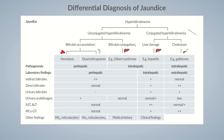To sum up, laboratory findings in extrahepatic jaundice characteristically show increased serum direct bilirubin levels, significantly elevated serum alkaline phosphatase and gamma-glutamyl transferase levels, and normal to mildly elevated serum transaminase levels. Also, an abdominal ultrasound may show dilated extrahepatic bile ducts.